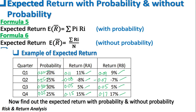As we already know, expected return is the return which we are expecting from the investment into securities. When we are expecting, it may happen or may not happen — that is the reason why probability has to be included into the calculation. Probability is nothing but chances of occurrence. Either the expected return is going to be realized at the end of the day or not is going to depend upon the probability, so we are supposed to include the probability into the expected return.